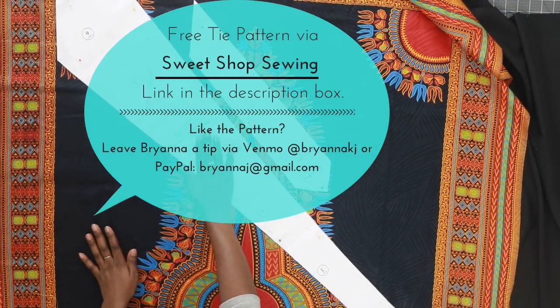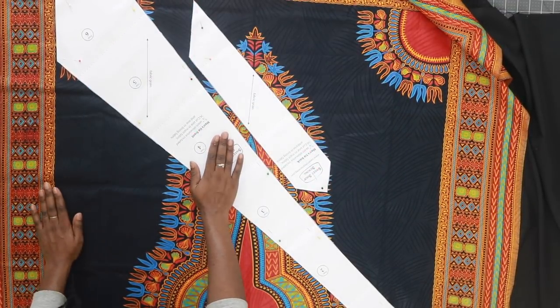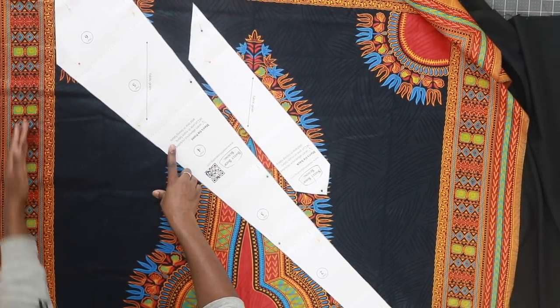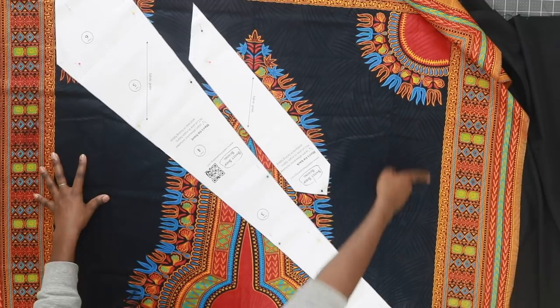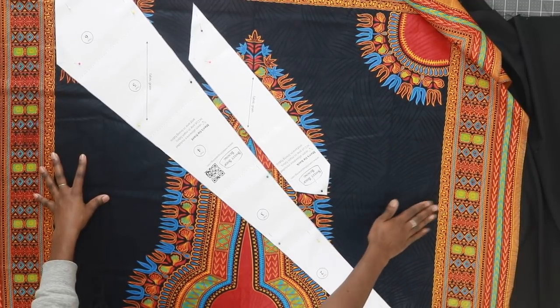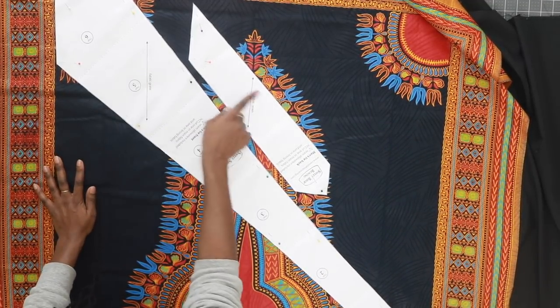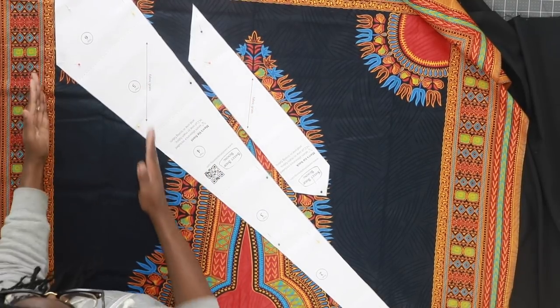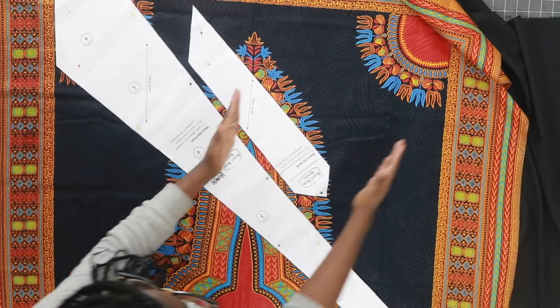Then I laid my pattern pieces on top. Now I have the selvedge edges over on this side and then also the selvedge edges over here on this side. And then when you lay out the pattern pieces, make sure that this grain line is running parallel to the selvedge.